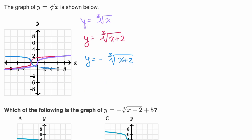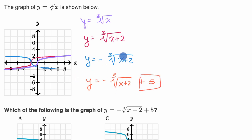Last but not least, y equals the negative of the cube root of x plus two, and I'm going to add five. All that's going to do is take this last graph and shift it up by five — whatever y value we were getting before, we're now going to get five higher. I was at zero here, so now I'm going to be at five. It's going to look something like that. I know I'm not drawing it perfectly, but you get the general idea.